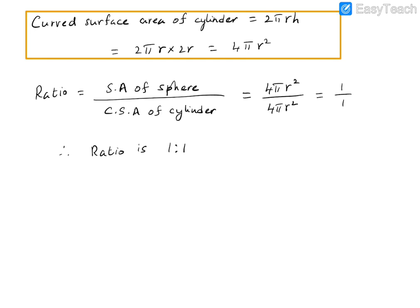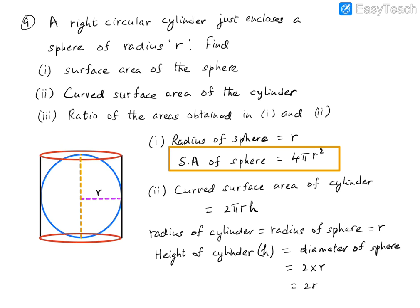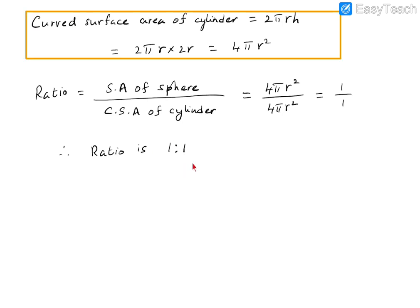The ratio is 1 is to 1. Because the sphere fits exactly inside the cylinder, the radius of the cylinder equals the radius of the sphere, and the height of the cylinder equals the diameter of the sphere, which is 2r. With that information, we calculated the surface area expressions and found that their ratio is 1 is to 1.